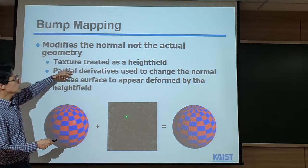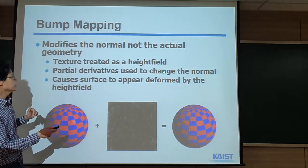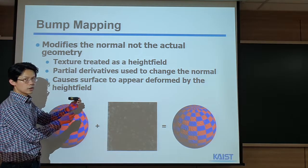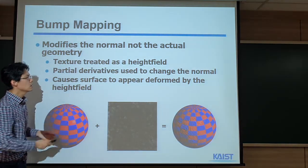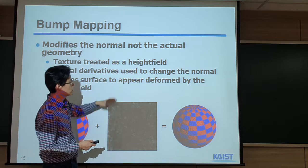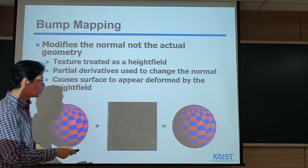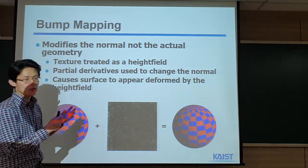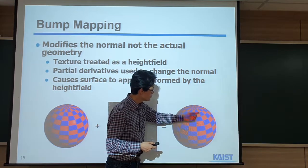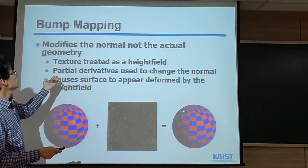Suppose we got the normal at that point, and at the corresponding texture, we adjust this normal along that direction. So we modify the normal, not the actual geometry. We treat the texture map as a kind of height field. In each pixel, we encode the partial derivative used to change the normal along the UV direction. You can change the normal direction along the x or y direction. We store that information, and by doing that, we can make the surface appear deformed by this height field.